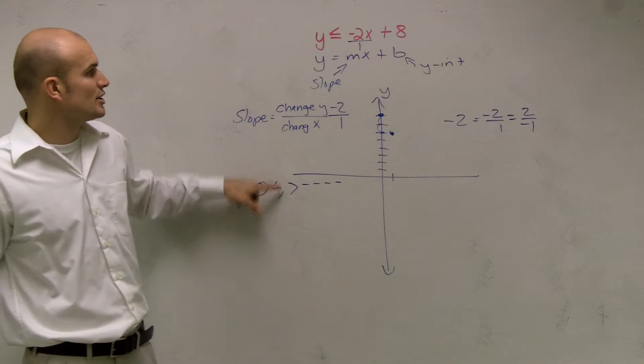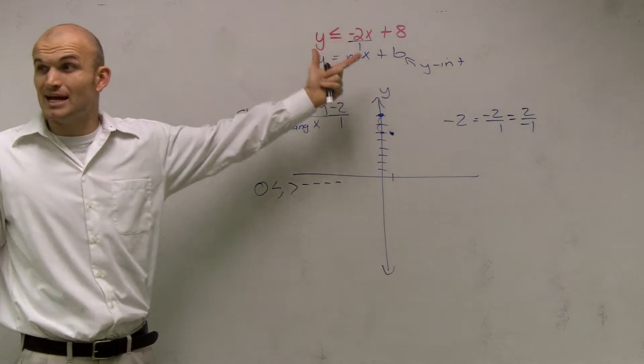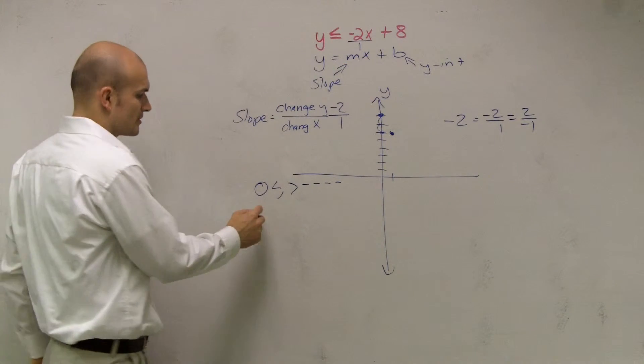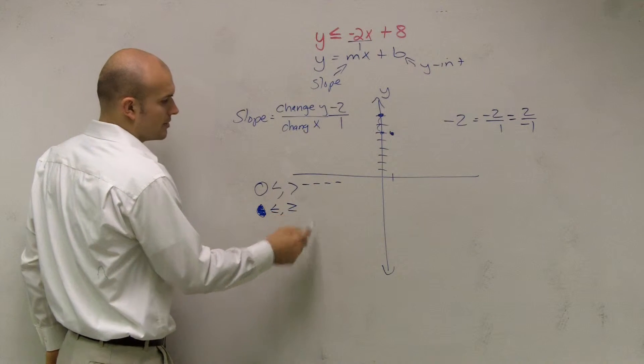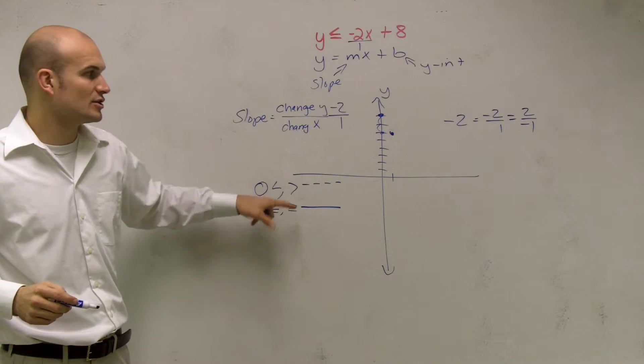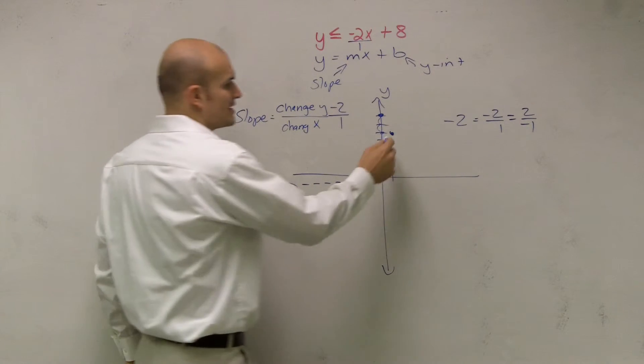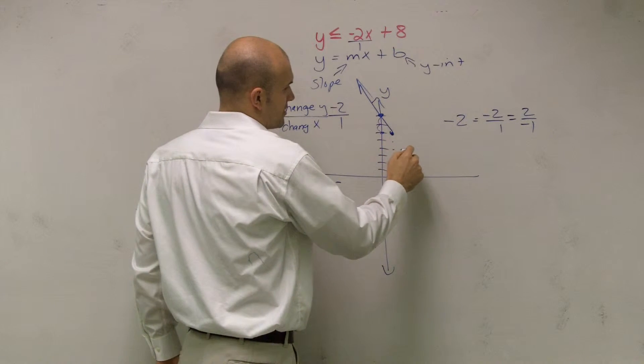Is this linear inequality dealing with a less than or a greater than? No. It's dealing with a less than or equal to or a greater than or equal to. So when we have those, we have what we call solid lines. Whenever you see a less than or equal to or a greater than or equal to, we're going to have a solid line. Therefore, I can just fill this in like a regular graph.